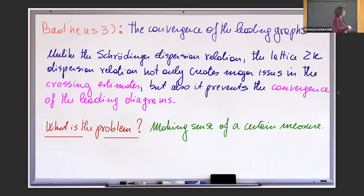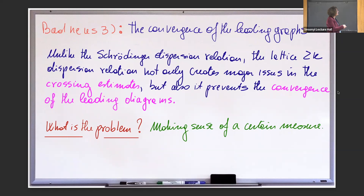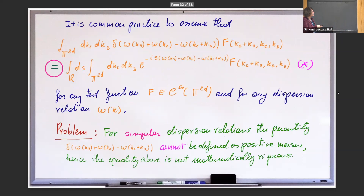The final bad news: the convergence of the leading graphs. If you remember in the simple derivation, stopping at the second level, there were integrals of exponentials and sums of omega. So those things appear in the leading graphs — you have to take the limit there. Different from the Schrödinger equation, and also because we are on the lattice, this makes things more complicated. Taking the limit on the leading graphs — the ones supposed to give you the equation — is complicated and you have to adjust things.